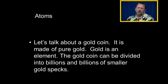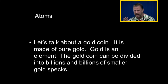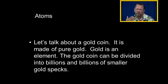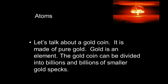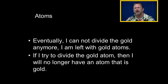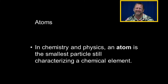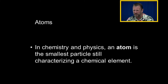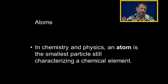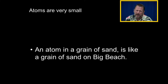Let's say a gold coin is made of pure gold. Gold is an element — there is an atom called gold with gold properties. We can divide that gold coin into billions and billions of smaller gold specks, but finally, if we try to divide the gold atom further, we can't — or we end up with a mushroom cloud. There comes a point where you can't divide it anymore, and that is the definition of an atom.